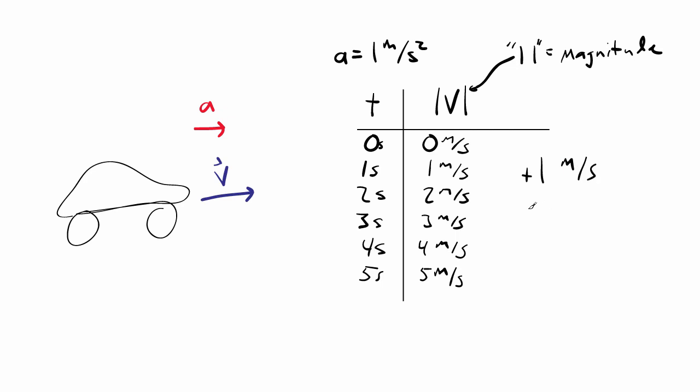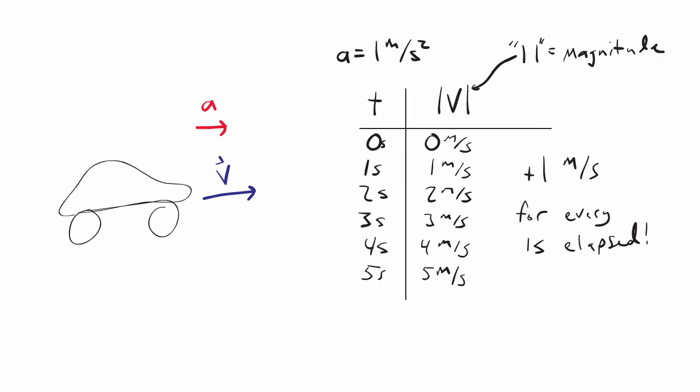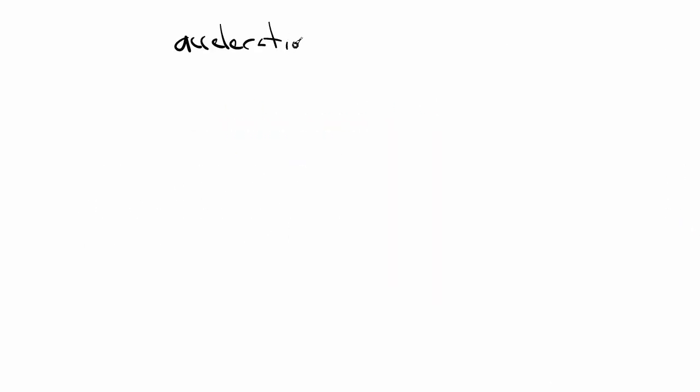An object that is initially at rest and is accelerating at 1 meter per second squared in the positive x direction will have a velocity of 5 meters per second in the positive x direction after 5 seconds have elapsed. Since our basic definition of the acceleration is the rate of change of the velocity, just like before we can define an average acceleration and an instantaneous acceleration.